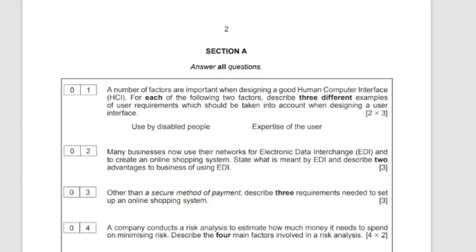A number of factors are important when designing a good human-computer interface. Each of the following two factors describe three different examples of user requirements which should be taken into account when designing a user interface. Use by disabled people and expertise of the user.